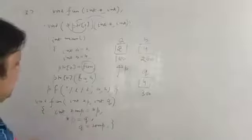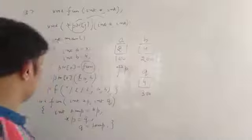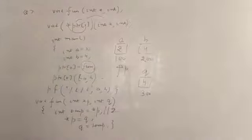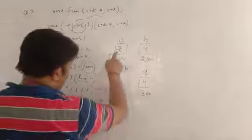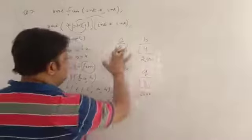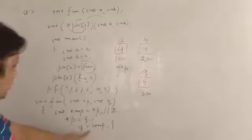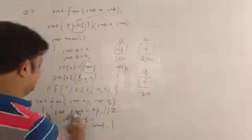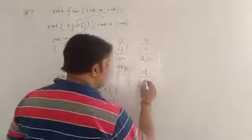int temp is equal to star p. Since your p is pointing at 100, star of this is 2, so value of temp temporary variable is 2. And star of p is equal to q. p here points to 2, I have changed it to q. q's value was 4, so this value will be 4. And then q is equal to temp. temp's value was 2, so q's value will be 2.